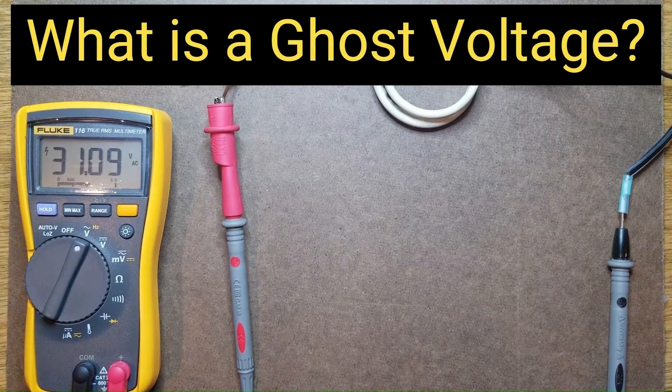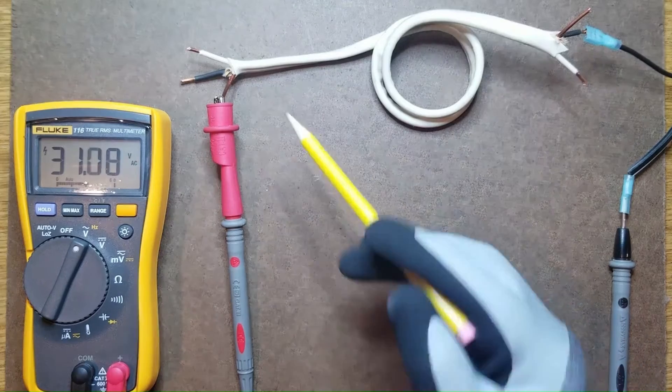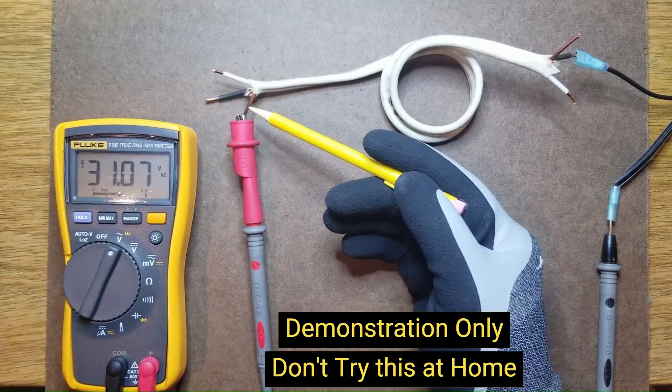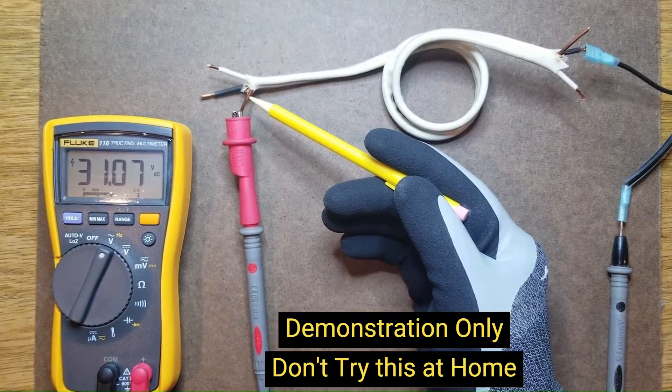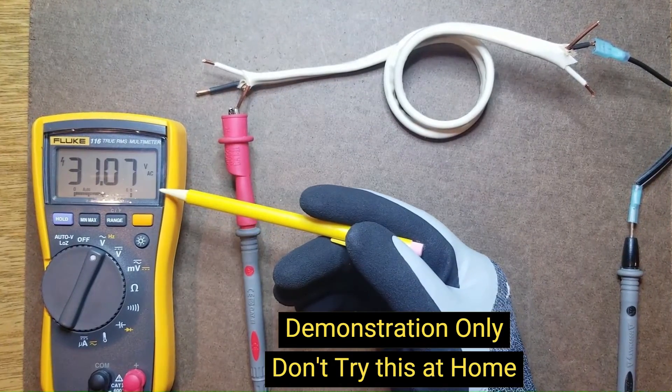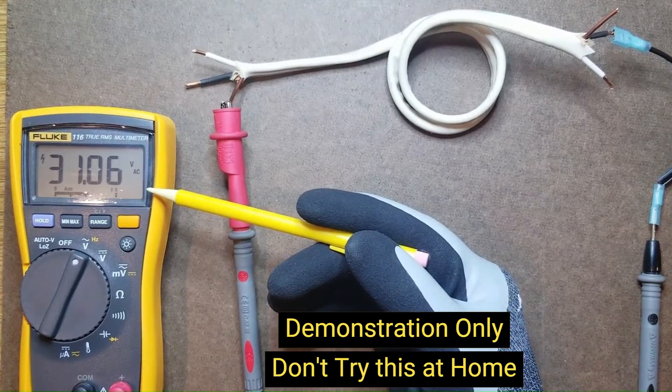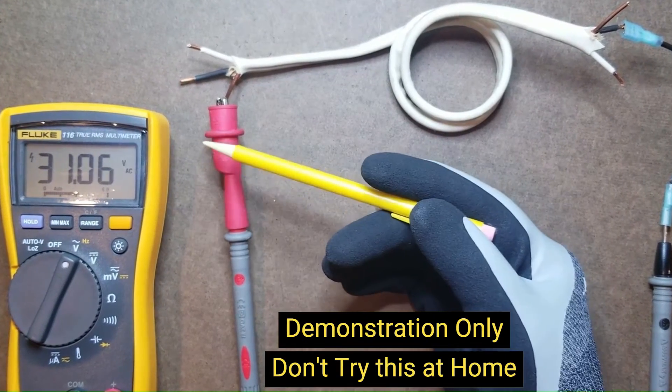What is a ghost voltage? It is a voltage that appears on an undefined conductor due to proximity to other conductors or magnetic induction. Although you can detect such a voltage with a regular voltmeter, its ability to supply current is very weak. Therefore, if you put a load on this voltage, it can almost completely disappear.